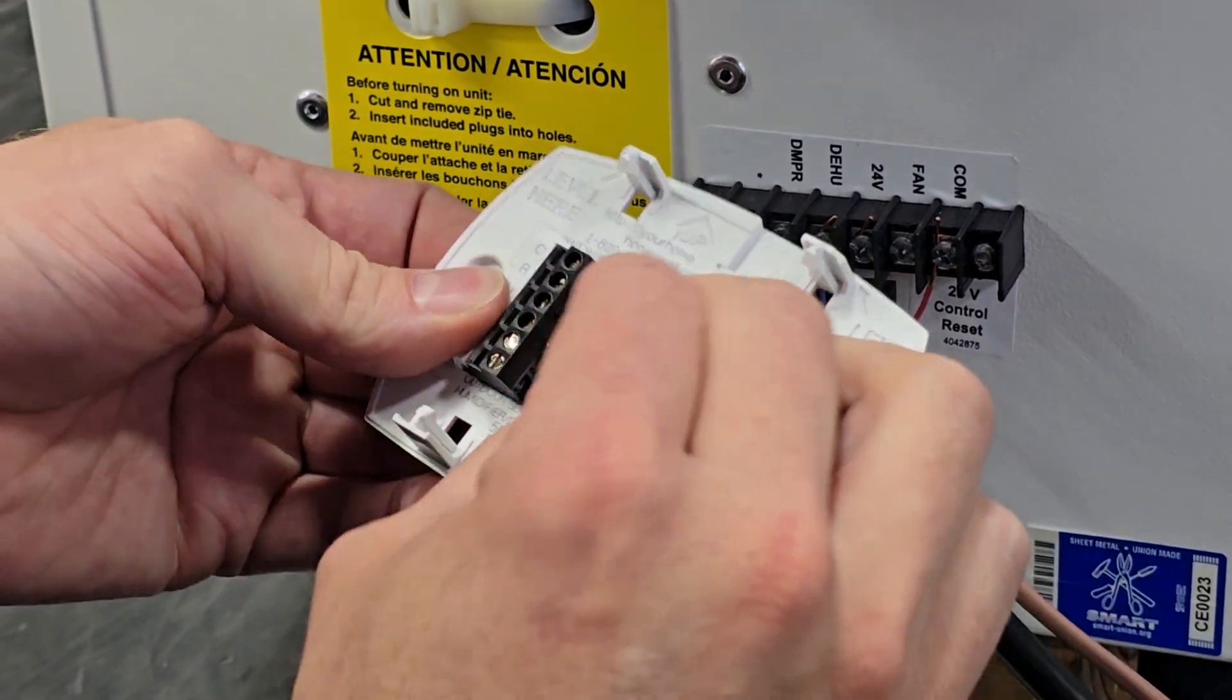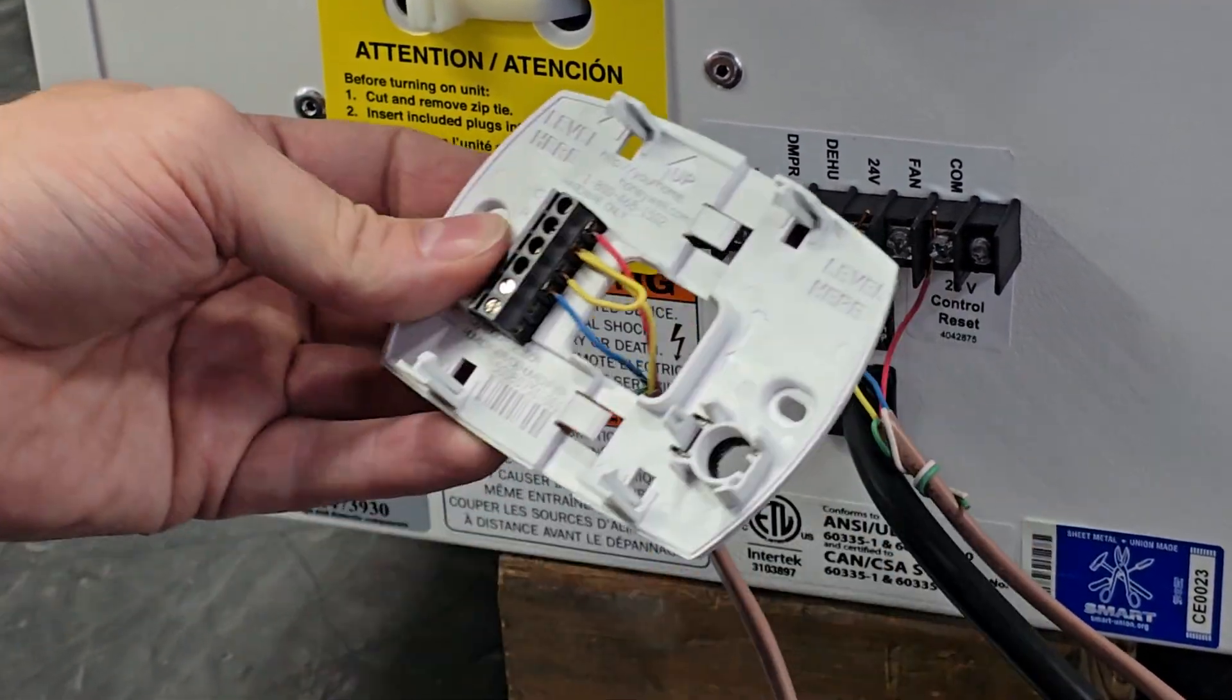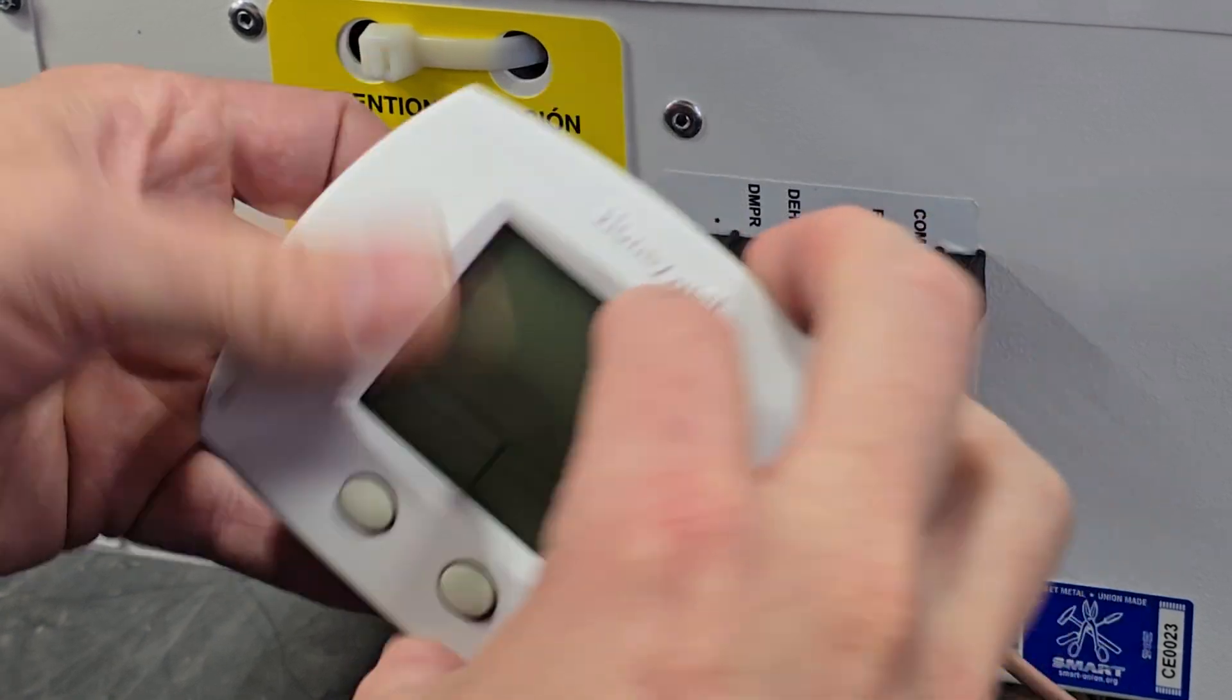Make sure you tug on those, make sure they're nice and in there and they're not going to pop out. Once that's complete you can take the control and snap it back in.